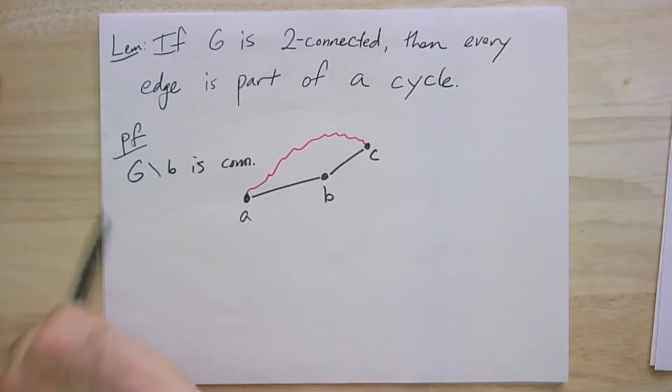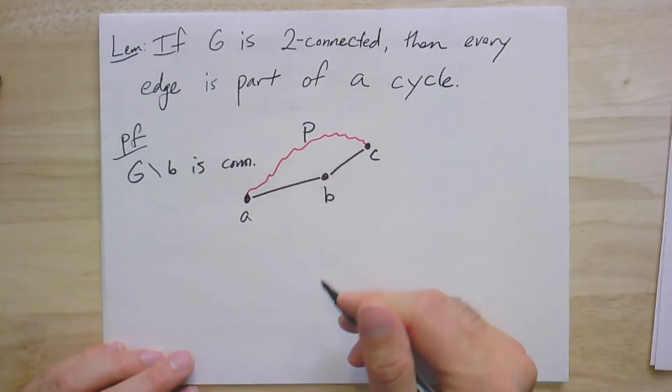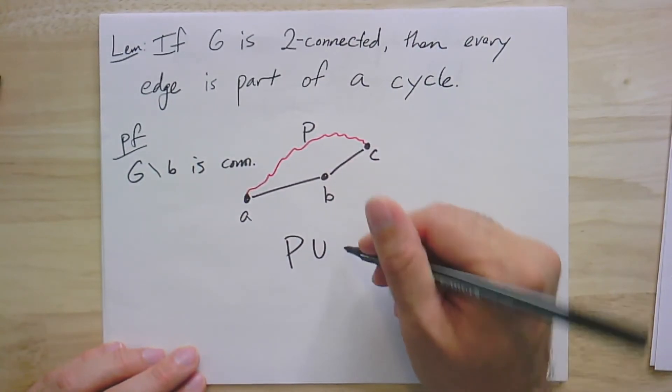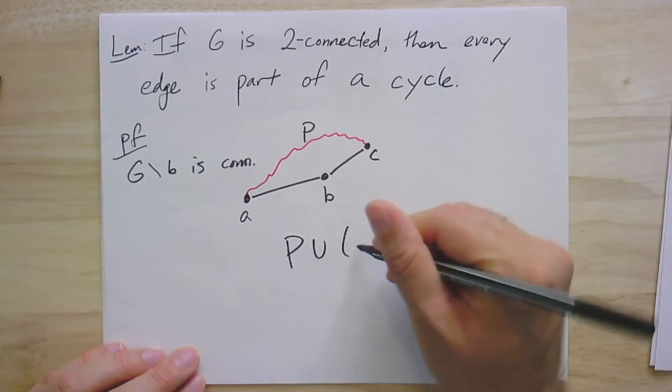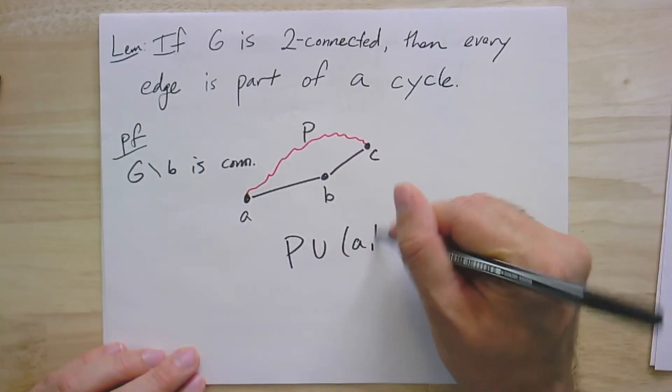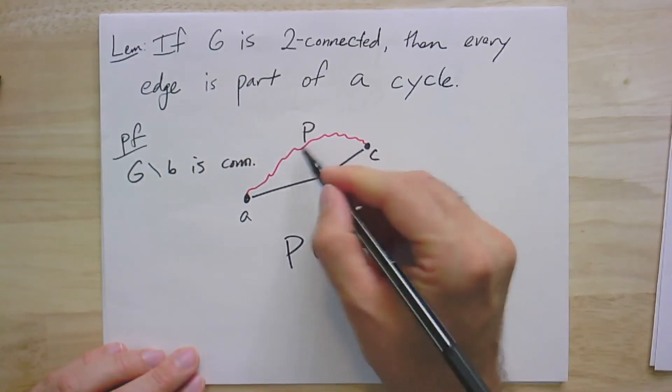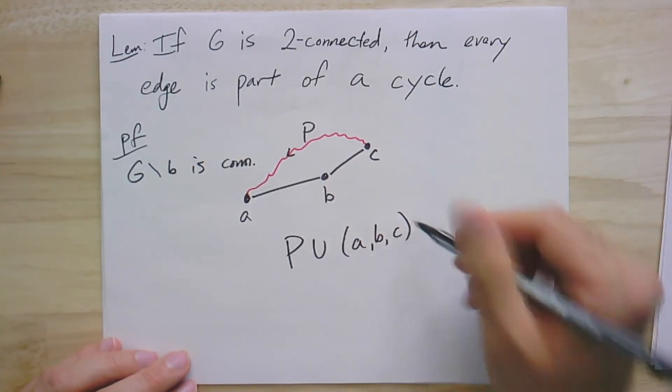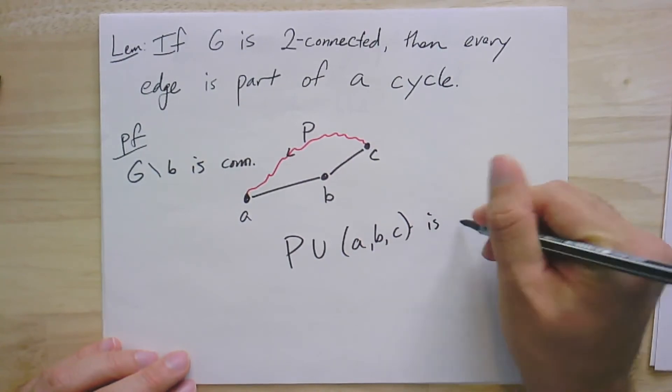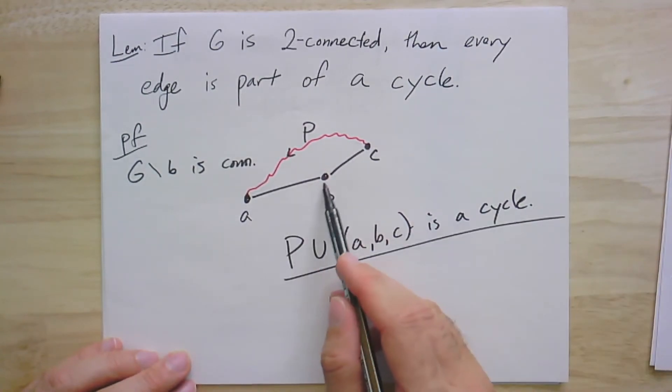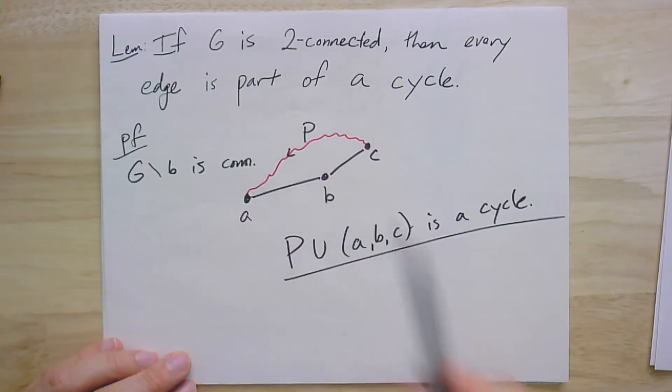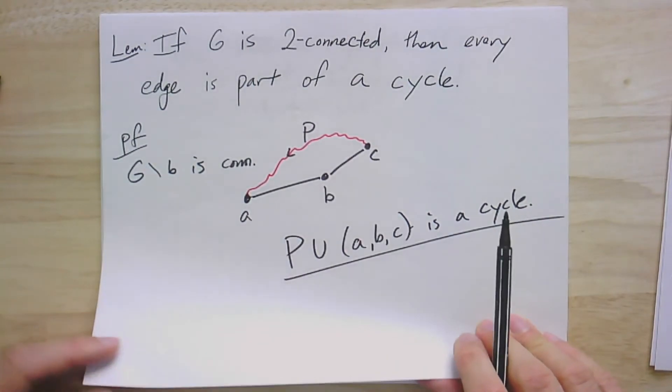And this path, if we call it path P, P combined with the edges, this other path A to B to C, then this together is a cycle. The goal was to show that every edge is part of a cycle, so we pick an arbitrary edge, and we show that for every edge we pick, we can always find a cycle that contains that edge. It's a nice idea.